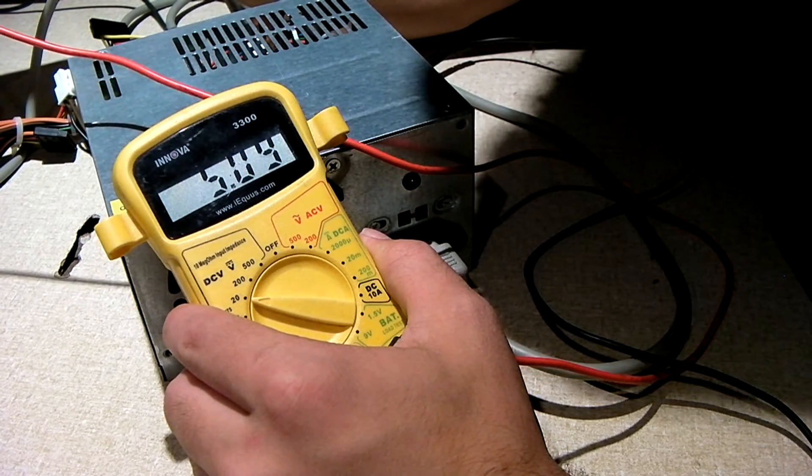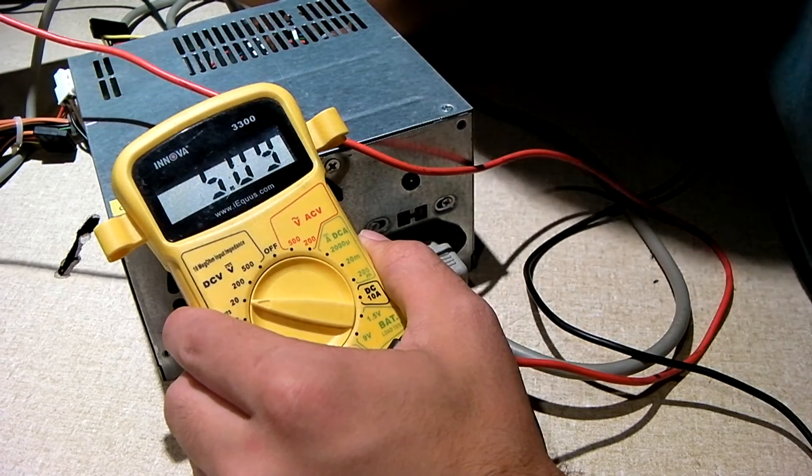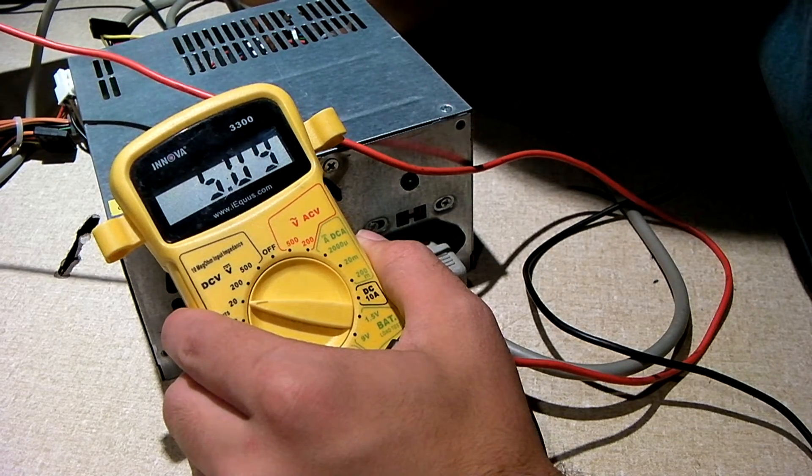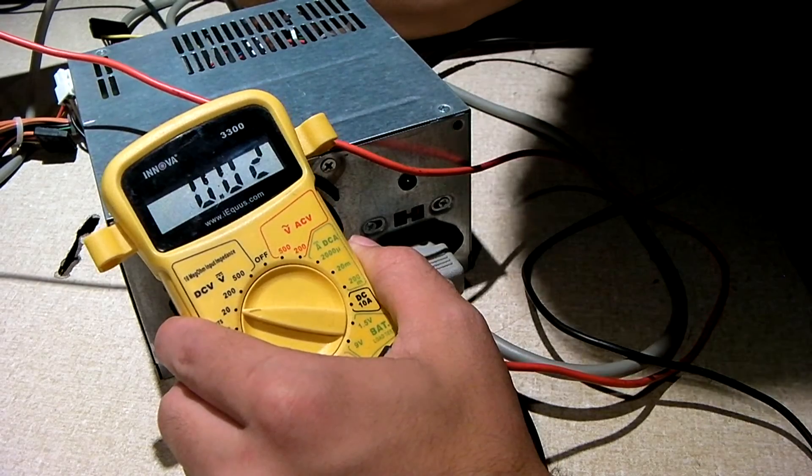5 volt standby gives us about 5.1. That's the purple wire. But the gray wire, we have zero.